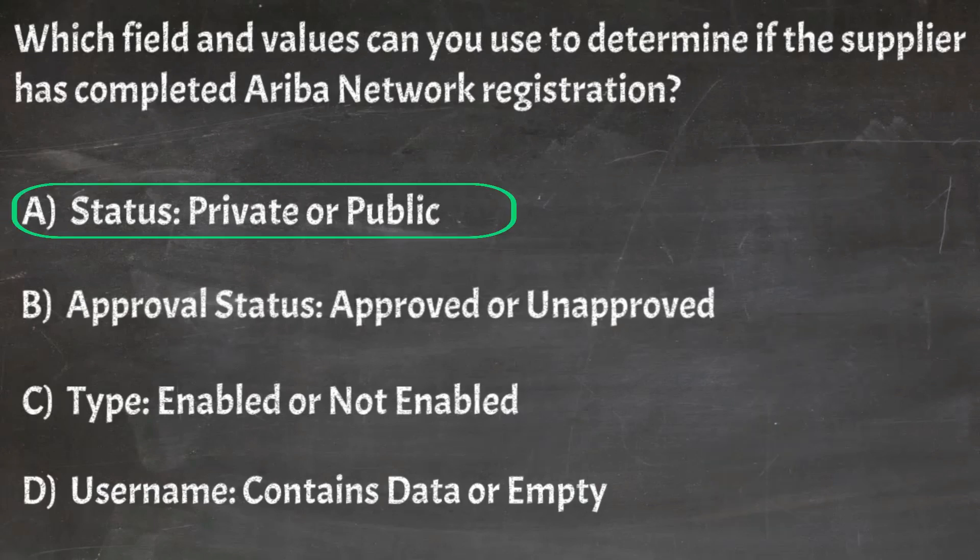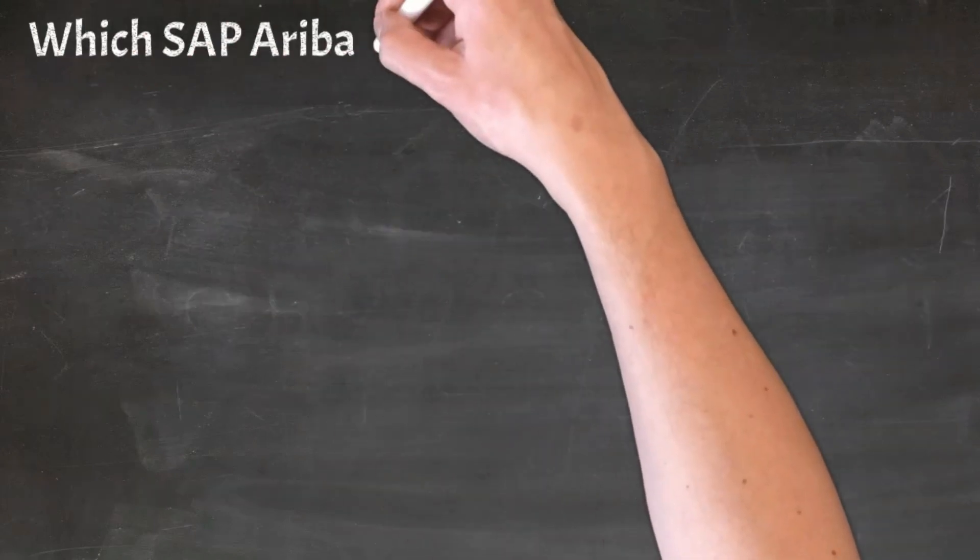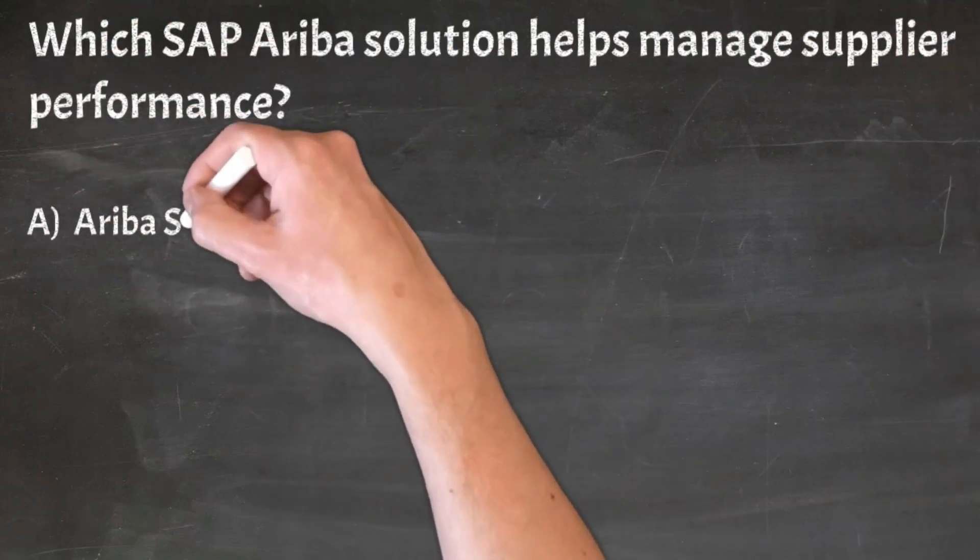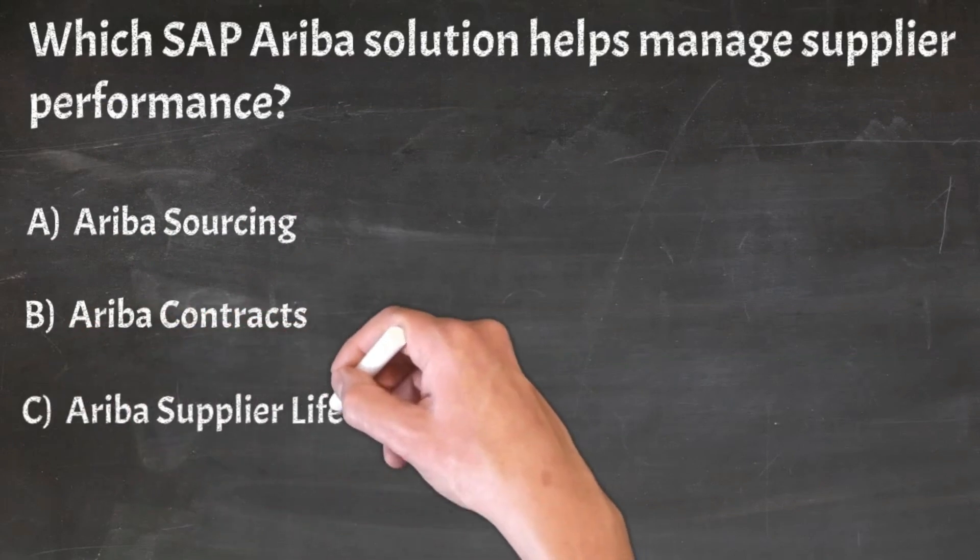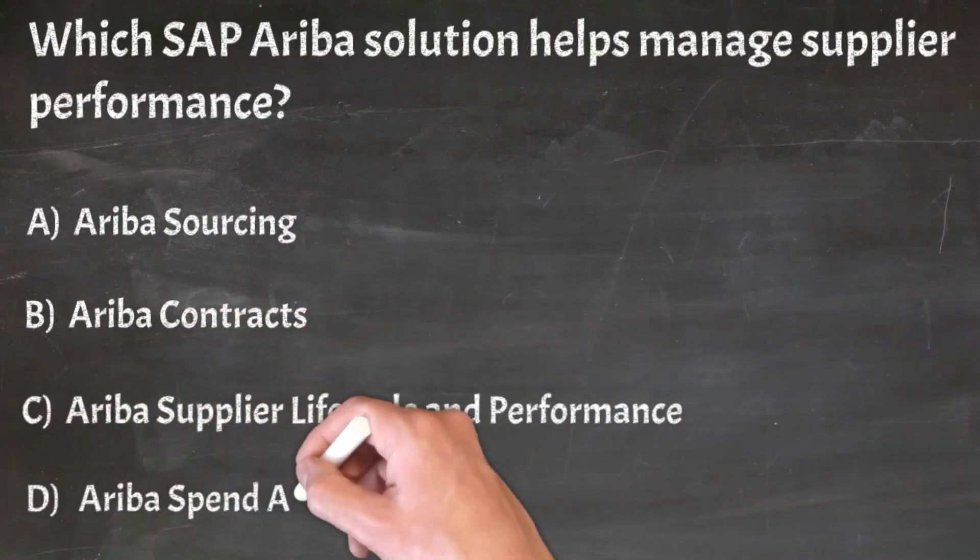Correct answer: A. Status private or public. Question 23: Which SAP Ariba solution helps manage supplier performance? A. Ariba sourcing, B. Ariba contracts, C. Ariba supplier lifecycle and performance, D. Ariba spend analysis.